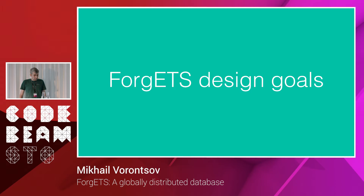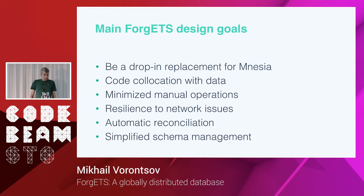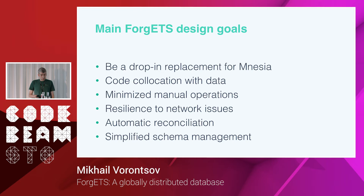Now you know literally everything about how we run Mnesia at WhatsApp. Let's get back to Vargets and its design decisions. First, Vargets has to be a drop-in replacement for Mnesia, and it should be as easy as possible to migrate from Mnesia to Vargets. Second, we still want code colocation with data — we love it, it's very efficient. Third, we want to minimize manual operations, which is part of WhatsApp culture. If something can be automated, we will automate it. To support this, we need to be resilient to network issues and support automatic reconciliation.